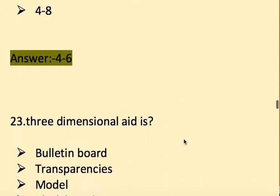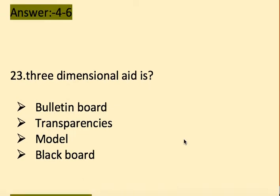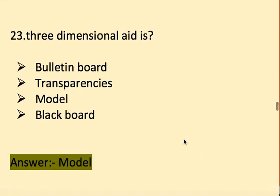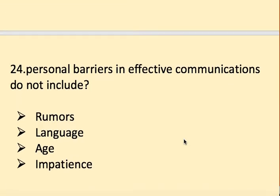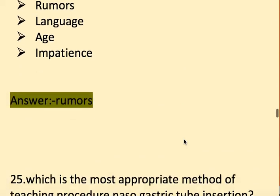Next question: Which is a three-dimensional aid? Options: bulletin board, transparency, model, and blackboard. The right answer is model. Next question: Personal barriers in effective communication do NOT include — options: rumors, language, age, and impatience. The right answer is rumors.